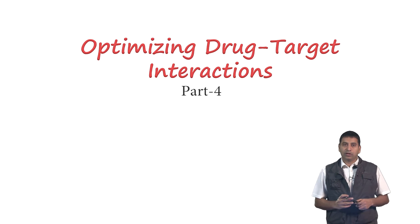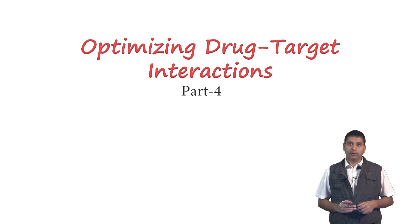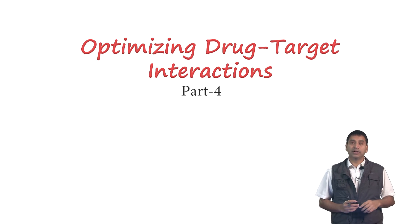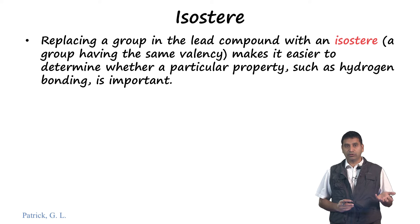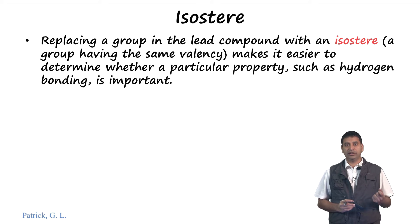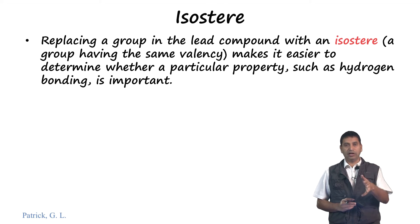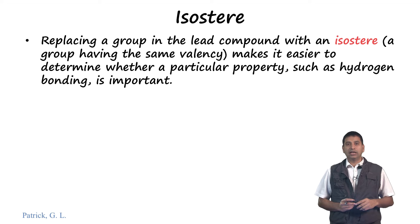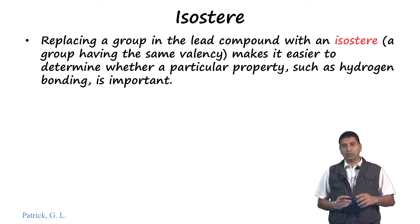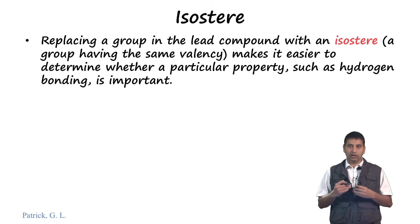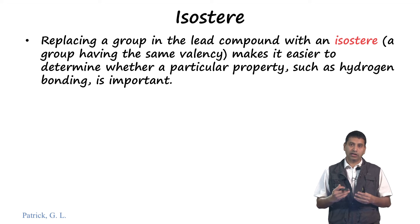Welcome back. Continuing on the topic of optimizing drug-target interactions, we are going to look at various strategies. To begin with, in today's lecture we look at the concept of isostere. We have already looked at it previously - an isostere is a group that has the same valency, so it makes it easier to determine whether a particular property, for example hydrogen bonding, is important or not. Replacing a group in the lead compound with an appropriate isostere will help us optimize the drug-target interactions.